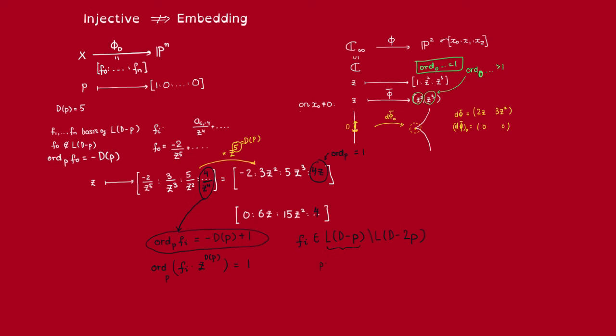But here, for it to not lie in this, that means it does not have a pole of order less than or equal to 3. So that means that it must have a pole of order exactly 4 if it does not have a pole of order less than or equal to 3. And when can we find such an element F_i? Well, that's only if L(D - 2P) is not going to be equal to L(D - P).